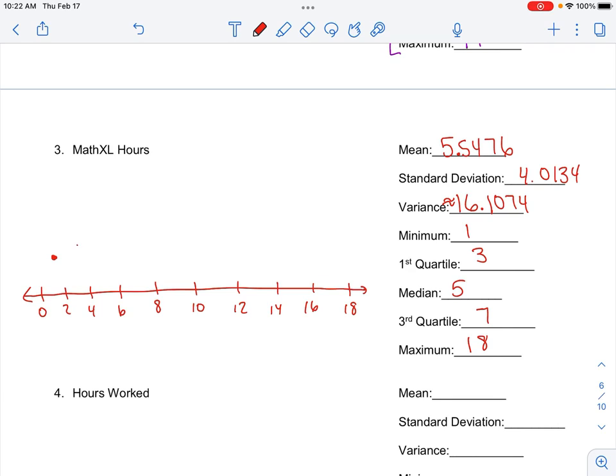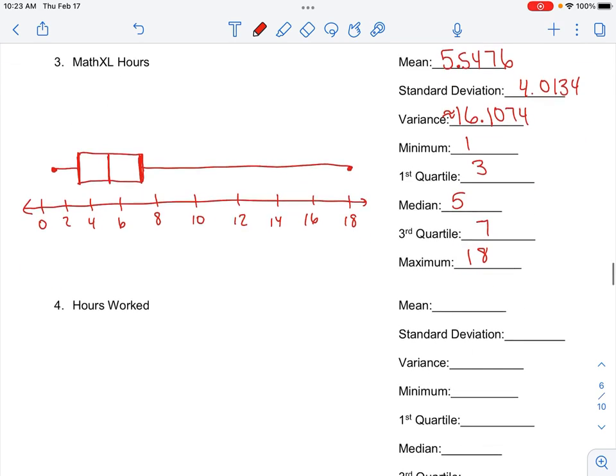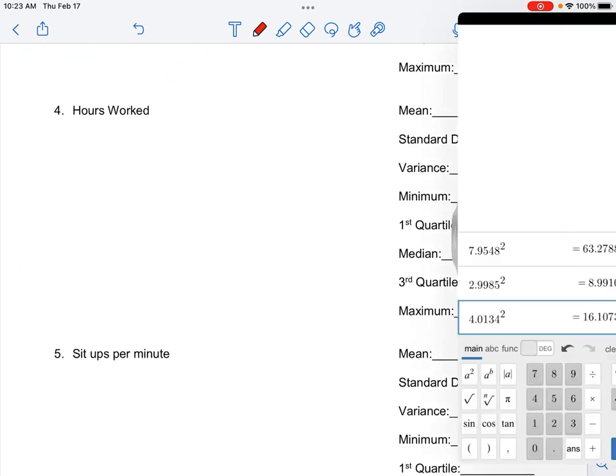Minimum 1, quartile 1 is 3, median 5, quartile 3 is 7, maximum is 18. Alright, and then I'm just going to move on to the next problem.